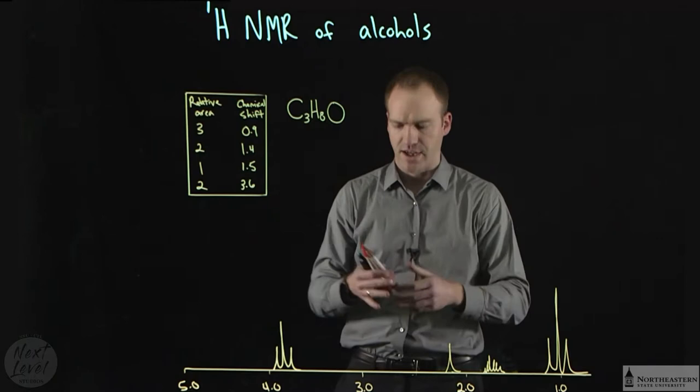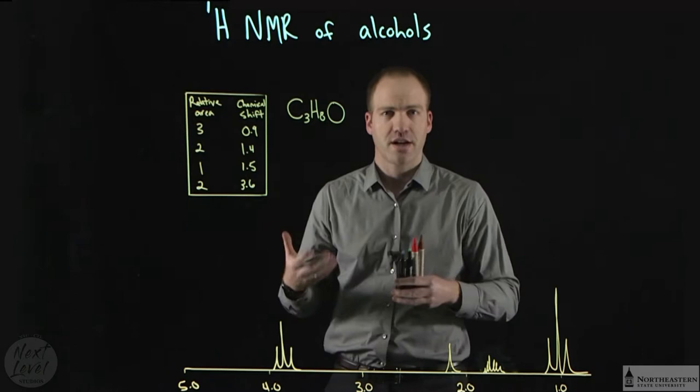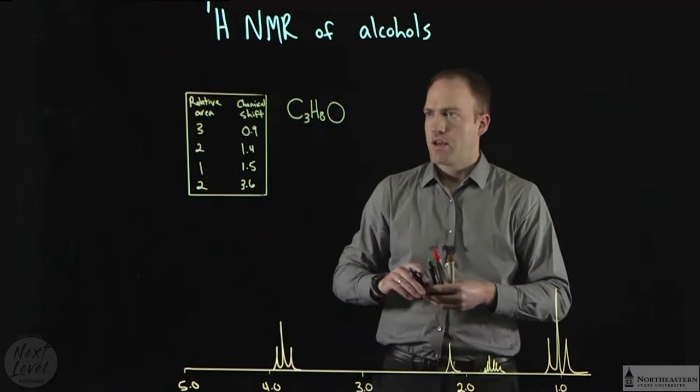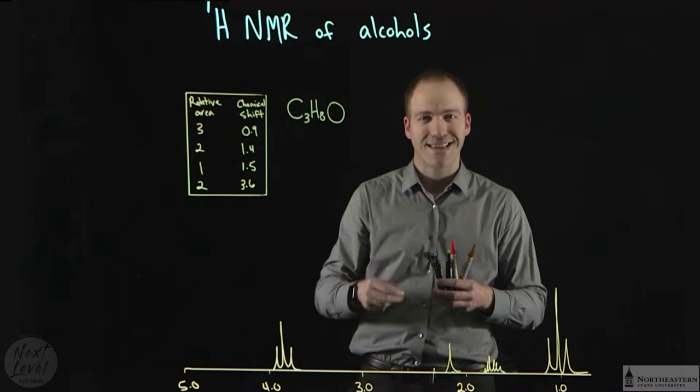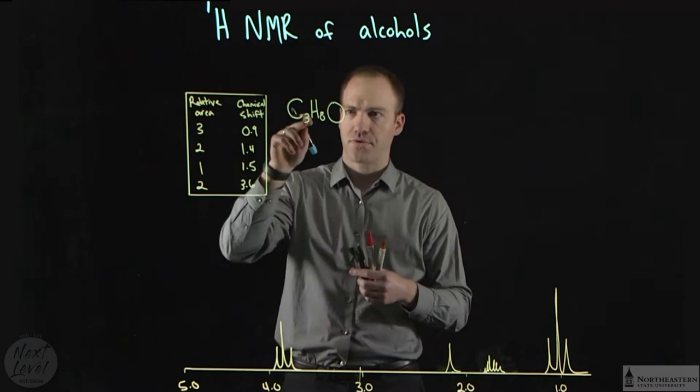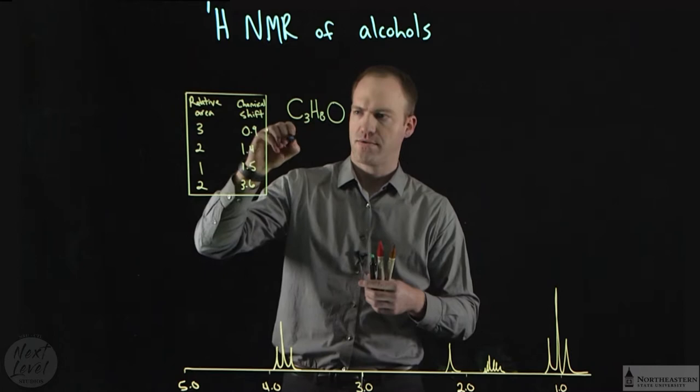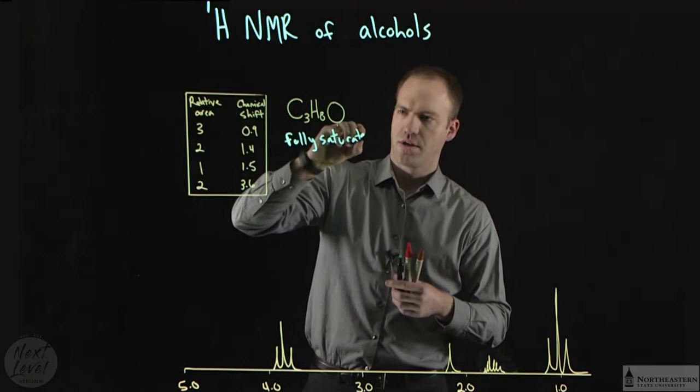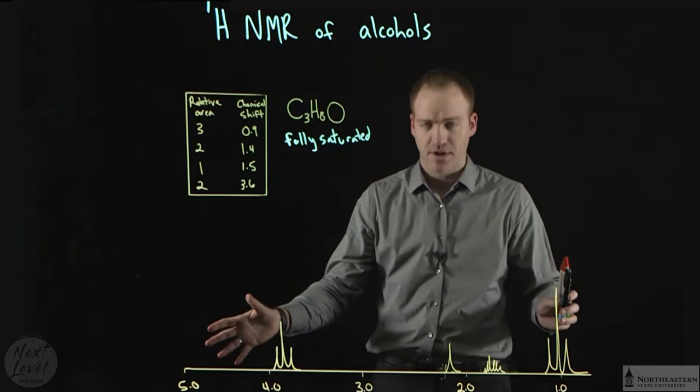The first thing you always want to do when you start on an NMR spectrum is take your unknown molecular formula and check for degrees of saturation. You may recall that you can count the number of carbons and predict how many hydrogens should be in that molecule if it's fully saturated. This is the 2N plus 2 rule. For a molecule that has three carbons, it should have twice that number plus two hydrogens. So 3 times 2 is 6 plus 2 is 8. This is a fully saturated molecule. That means I shouldn't be looking for any rings or double bonds, and that can be helpful to limit the total number of structures I can get from this NMR spectrum.